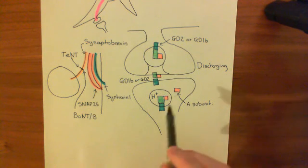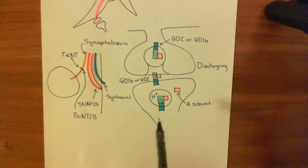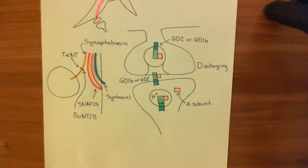Tetanus neurotoxin cuts it in the axon terminal of these glycinergic inhibitory interneurons. If you cut this synaptobrevin, then you don't form core SNARE complexes anymore. You don't dock vesicles at the membrane, and you certainly don't fuse them with the membrane. You stop neurotransmission.